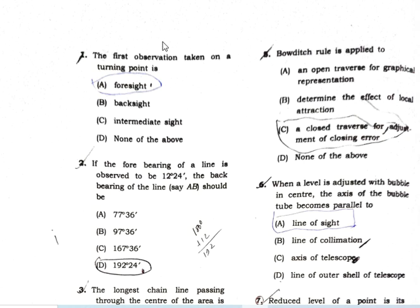The first question concerns the first observation taken on a turning point. If the fore bearing of a line is observed to be 12 degrees 24 minutes, the back bearing of the line is observed to be 182 degrees 24 minutes.